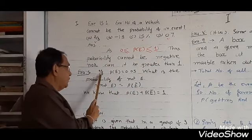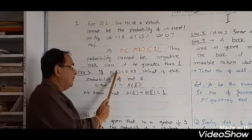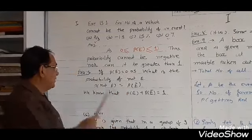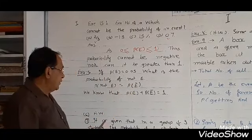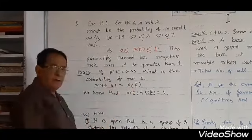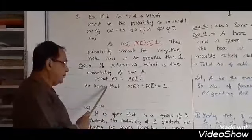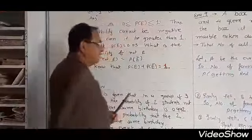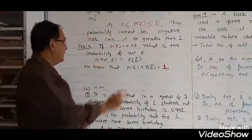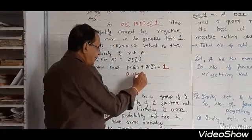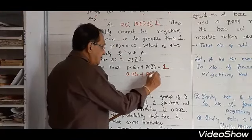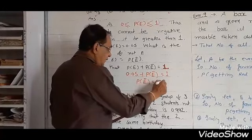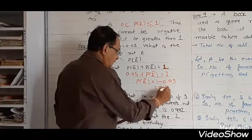Example number 5: if the probability of some event E is equal to 0.05, what is the probability of not E? P(not E) is equal to P(E bar). We know that P(E) plus P(E bar) is equal to 1. So, 0.05 plus P(E bar) equals 1, which gives P(E bar) equal to 1 minus 0.05, equal to 0.95.